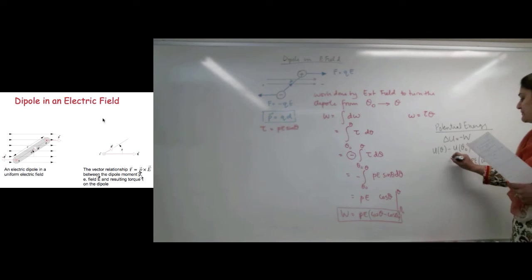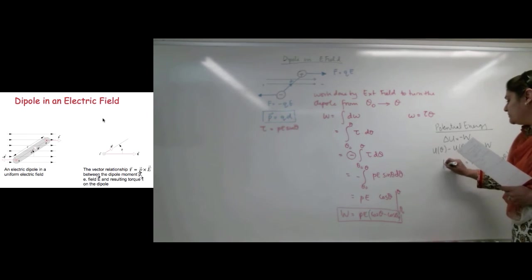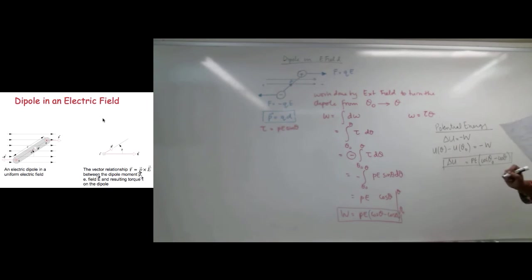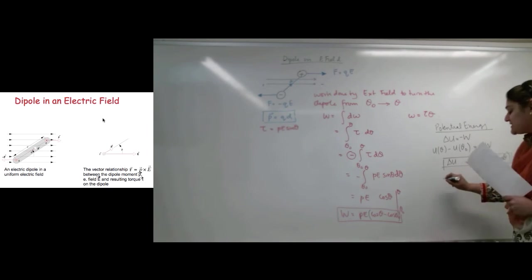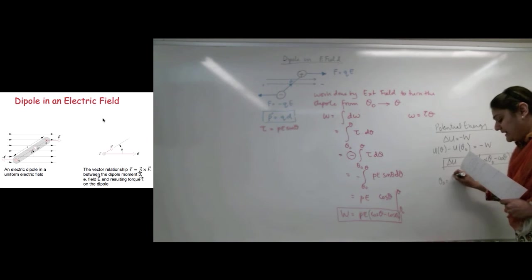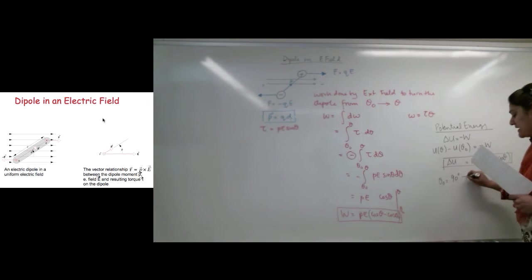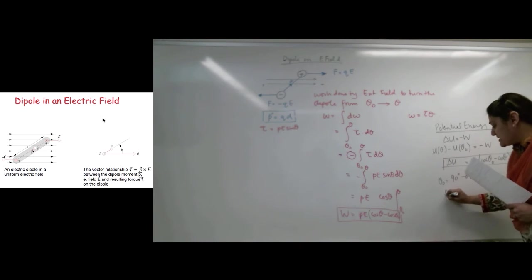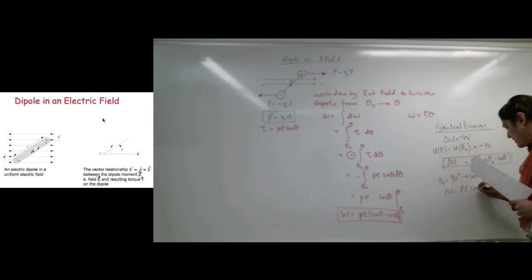So, that means delta U is given by this. Now, we can arbitrarily assign a reference angle, let's say theta 0. If theta 0 is 90 degrees, then this implies cosine of theta 0 is equal to 0, which reduces delta U equals PE cosine theta, which reduces this equation to PE cosine of theta.